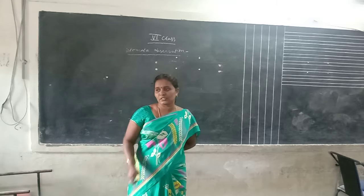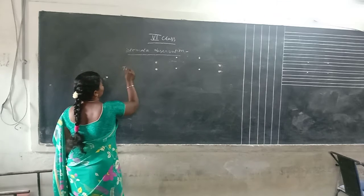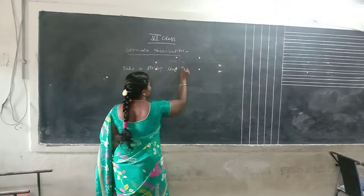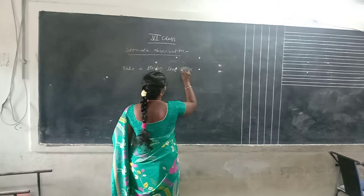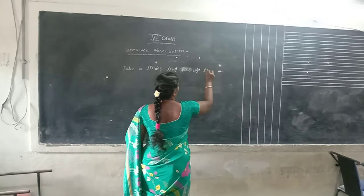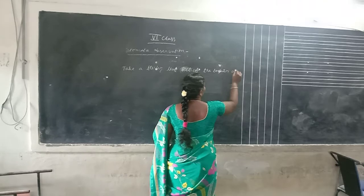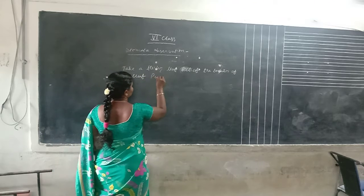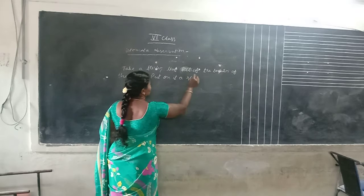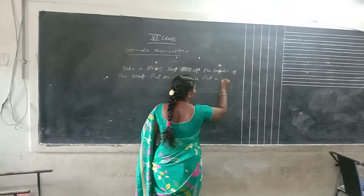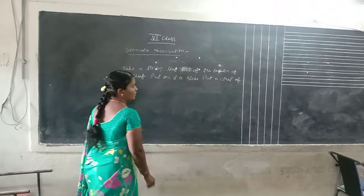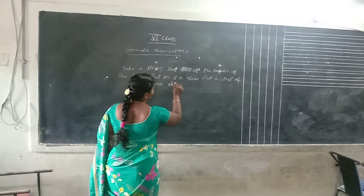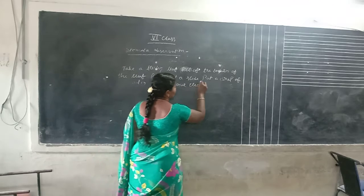The stomata is a bean-shaped structure. Take a fresh leaf, place it, peel down the layer of the leaf, put it on the slide, and put a drop of water. After that, observe under the electron microscope.